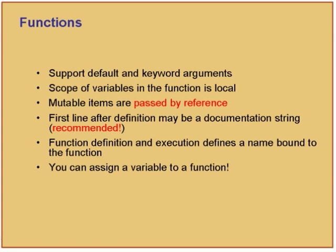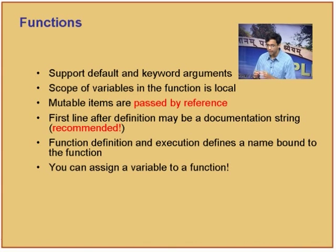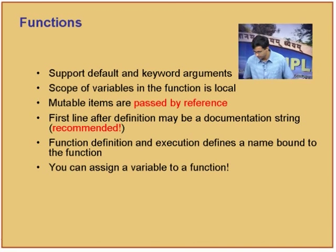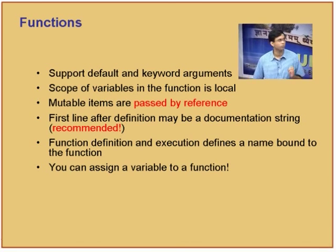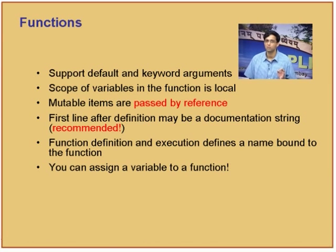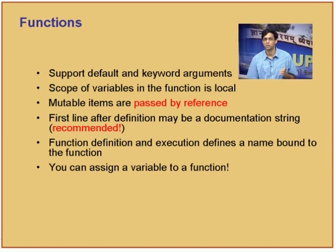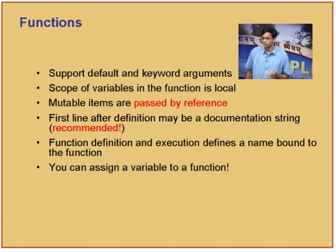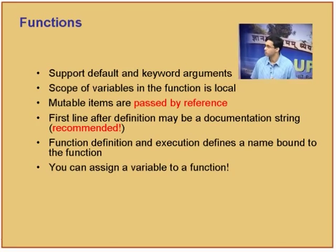Every time you create a function, the scope of variables in that function is local. If I create x equals 10 inside a function, x only exists inside that function. Mutable items, when you call a function, are passed by reference — not by copy. The first line after a definition can be a documentation string.